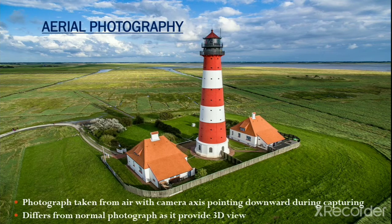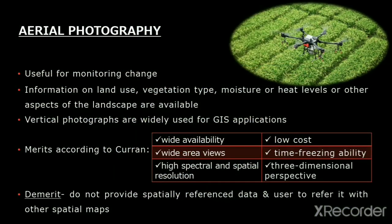Now let's look at aerial photography. Photographs taken from the air with a camera axis pointing downward at the time of capturing are aerial photos. These are different from normal photographs as they provide a three-dimensional view of geographical features. Aerial photographs are highly useful for monitoring changes in environment and agricultural patterns. Information on land use, vegetation type, moisture levels, heat levels, or any aspects of landscapes are available through aerial photographs. Vertical photographs are most widely used in GIS applications.